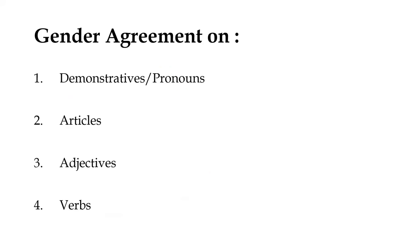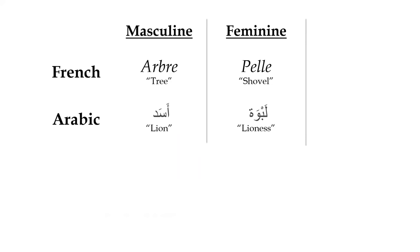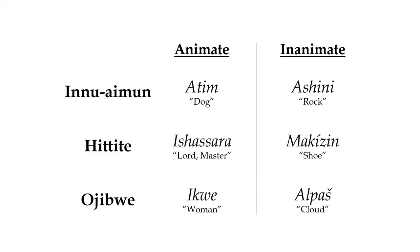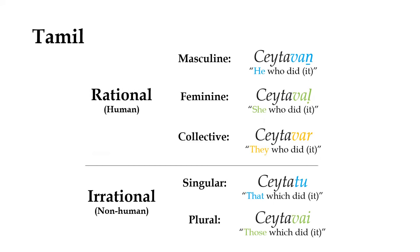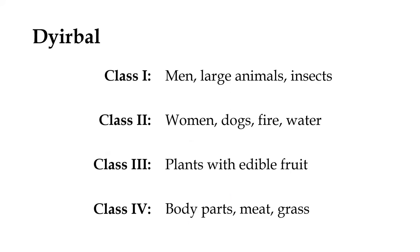As well as where and how gender is marked, languages also vary in what types of genders they distinguish. Despite the name, grammatical gender need not have anything to do with actual gender or biological sex, although this is one of the more commonly made distinctions. Most Indo-European and Semitic languages are known for dividing nouns into masculine and feminine, and some also include a neuter gender as well. But another common system is to categorize nouns based on animacy, which may occur as a simple binary split between animate and inanimate, or it may be divided into human versus non-human genders, the former of which may be further split into masculine and feminine, and sometimes a separate gender may exist for abstract or uncountable nouns as well.